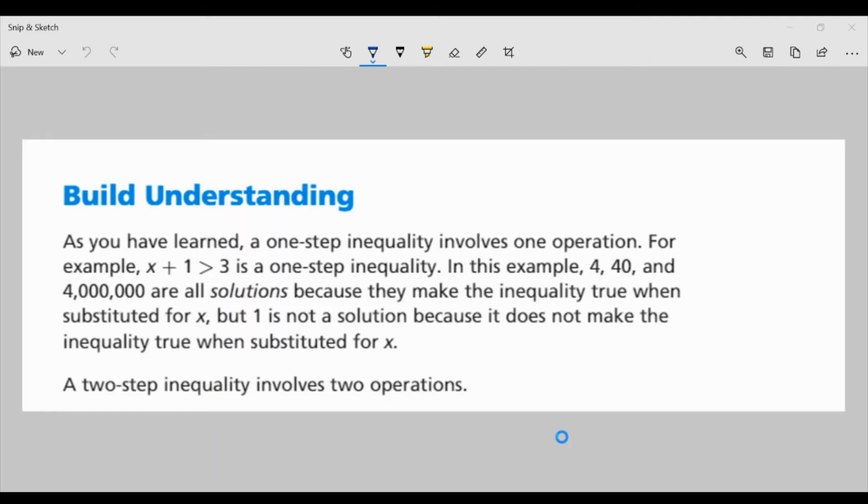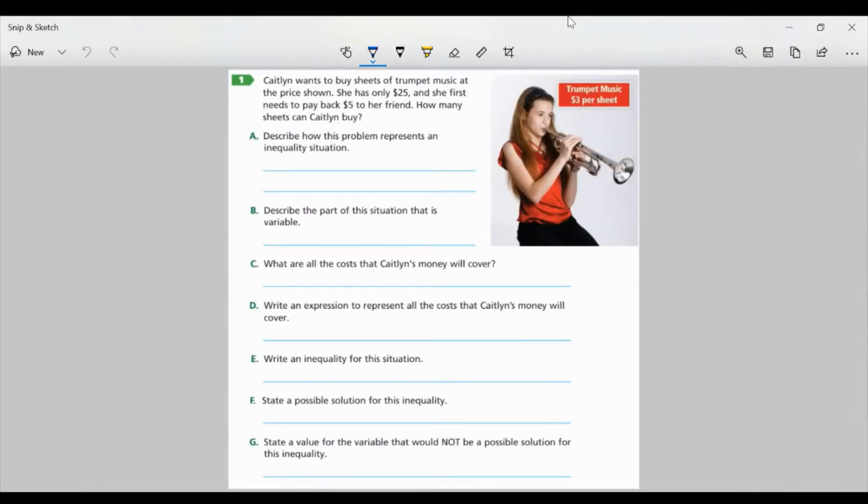But a two-step inequality involves two operations, and that's what we're going to go over today. So let's look at task 1. Caitlin wants to buy sheets of trumpet music at the price shown. She has only $25, and she first needs to pay back $5 to her friend. How many sheets can Caitlin buy? Well, according to the information in the picture, sheet music for trumpets is $3 per sheet.